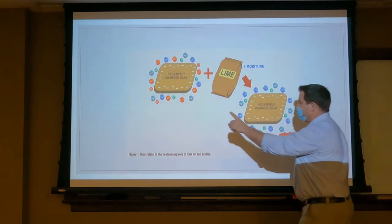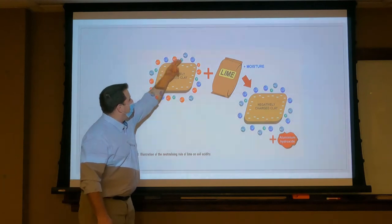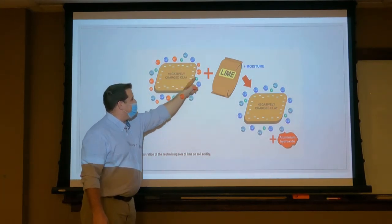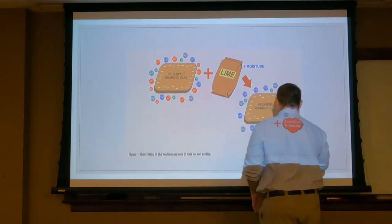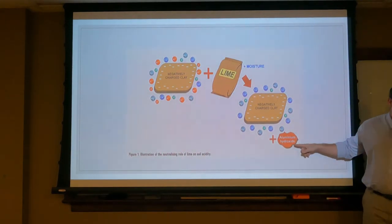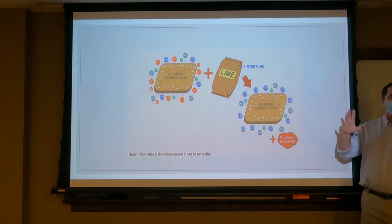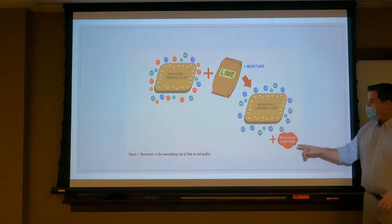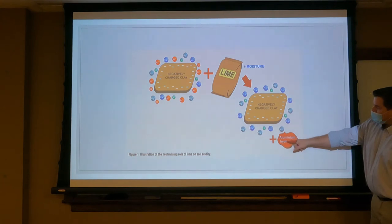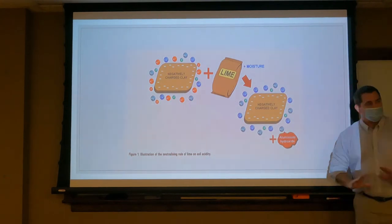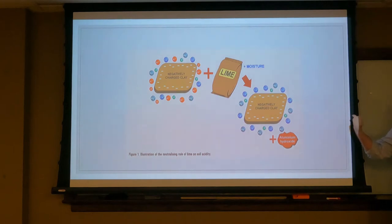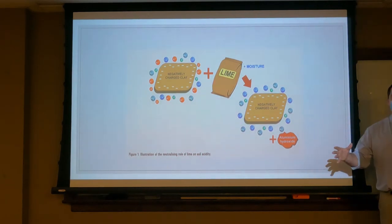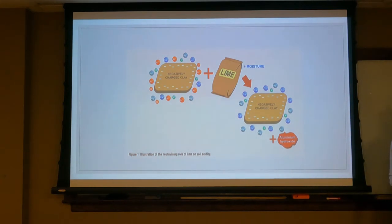Here we have our negatively charged clay, and you can see we have aluminums — and maybe a hydrogen or so — these are our acidic cations. We add lime, it undergoes calcium hydrolysis, we add more calcium and that displaces the aluminum to form aluminum hydroxide, which is gibbsite. Remember when I talked about aluminum hydrolysis — that is the mineral that forms aluminum hydroxide. Now we have replaced that aluminum with our calcium. It's a very simple concept: add water and lime. I'll try to get a lab on this, going over relative neutralizing value.